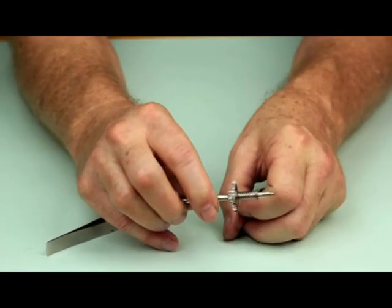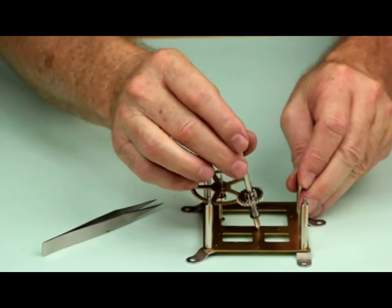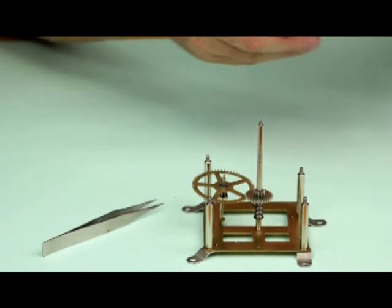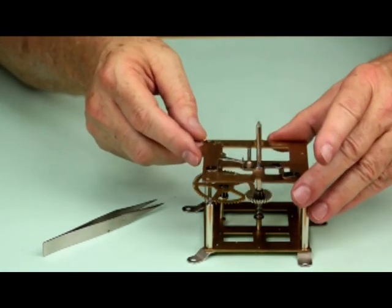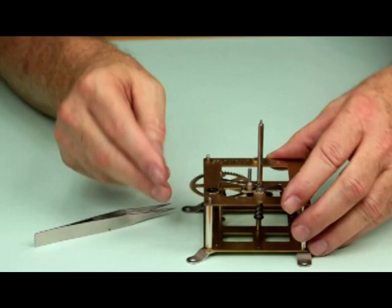Under normal conditions, this friction makes them act as though they are solidly connected together. So when the second wheel of the going train turns the center wheel, the cannon pinion and center arbor turn with it.